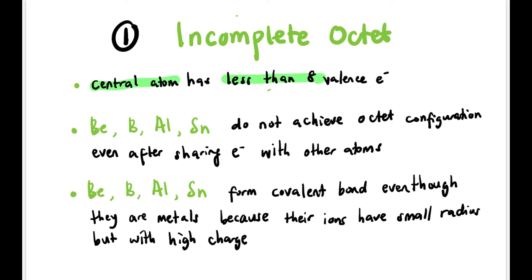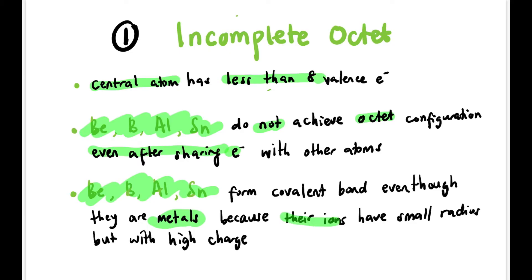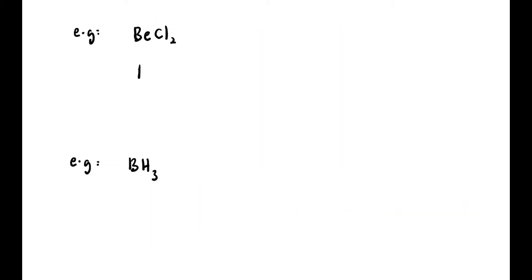The first exception is incomplete octet, where the central atom has less than eight electrons. Examples of central atoms include Be, B, Al, and Sn — they don't achieve the octet configuration even after sharing electrons. They actually prefer to form covalent bonds, because their size is very small compared to their high charge, so they find it difficult to transfer electrons and prefer to share instead.